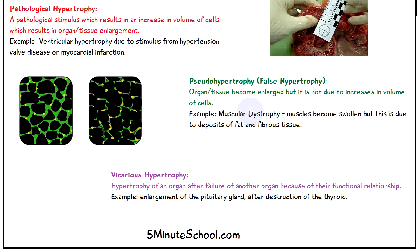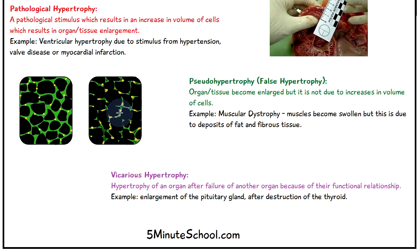Next is pseudohypertrophy, which is a false form of hypertrophy. This is where the organ or tissue is enlarged, but not because of an increase in the volume of the cells. An example is muscular dystrophy, where the muscles become swollen due to deposits of fat and fibrous tissue rather than increased cell volume. In the diagram, the black regions show healthy muscular tissue on one side, and on the other side — affected by muscular dystrophy — you can see more deposits of fat, while the muscle tissue cells remain the same size.